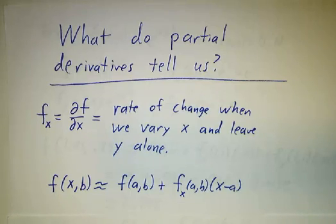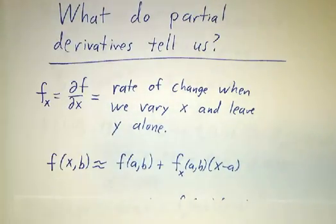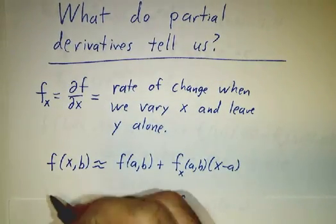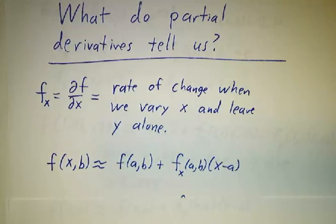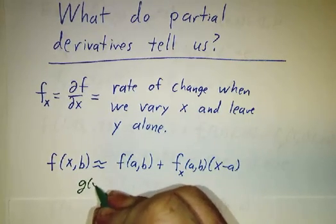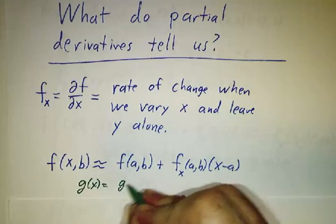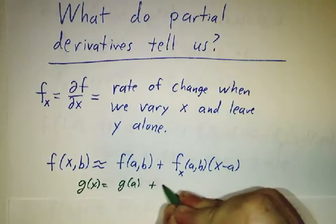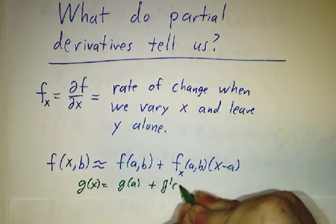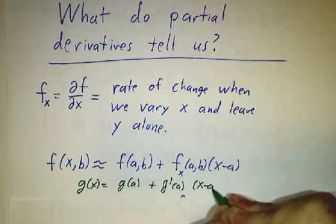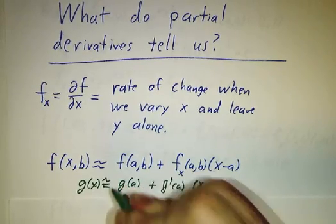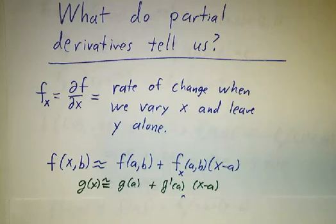Now this formula here should remind you of another formula that we had, namely g of x is g of a plus g prime of a times x minus a, and that's not exact, it's just an approximation. That's an old approximation we had.